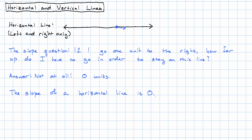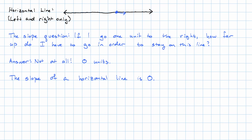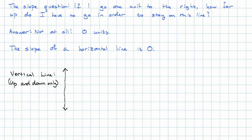So that's the simpler question. What if I have a vertical line? Again, what does it mean to have a vertical line? A vertical line only goes up and down. It doesn't go left or right at all.